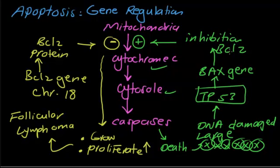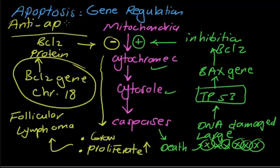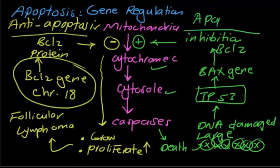TP53 causes inhibition of BCL2 gene. On the other side of the picture, BCL2 gene on chromosome 18 leads to inhibition of apoptosis and carcinoma. So the left side of the diagram is the anti-apoptosis feature, while the right side is the apoptosis illustration. Apoptosis is driven by TP53, and anti-apoptosis mechanism is driven by BCL2 gene on chromosome 18.